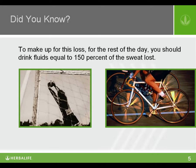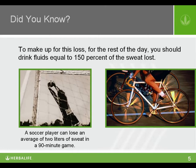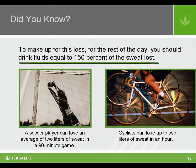Did you know that soccer players lose an average of two liters of sweat during a 90-minute game? Sweat loss by professional soccer players ranges from 1.06 to 2.65 liters during a 90-minute session in cool air. Cyclists can lose up to two liters of sweat and 1,000 milligrams of sodium per hour. To make up for this loss for the rest of the day, you should drink fluids equal to 150 percent of the sweat lost.